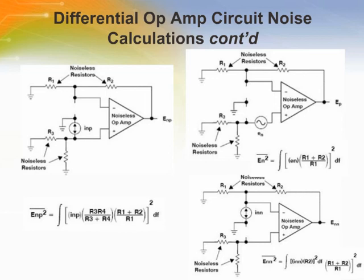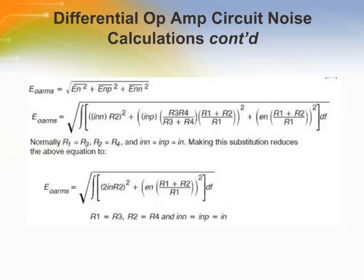Now consider the noise sources associated with the op amp itself. The analysis proceeds as before, as shown in the figures. Combining to arrive at the solution for the circuit's output RMS noise voltage, E sub OARMS, due to the input referred op amp noise in the circuit.